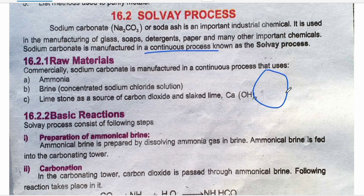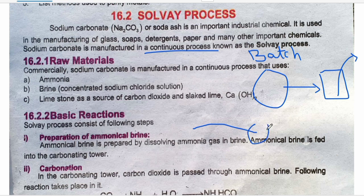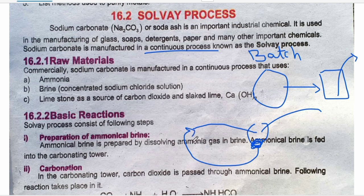In a batch process, you give a raw material, it becomes a product, you remove that product, then you give raw material again. In a continuous process, you give raw material, the product is made and removed, and by-products are produced which act as raw material again. So you keep adding raw material and continue the process. The Solvay process is a continuous process, as we will see when we look at the steps.